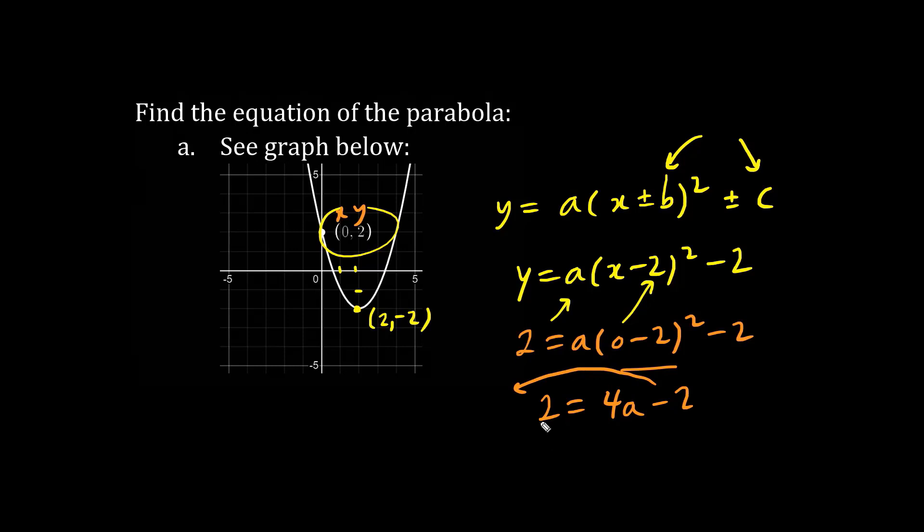We throw the negative over. We have 2 plus 2 is 4. And we realize, dividing both sides by 4, that A equals 1. So the actual equation is y equals 1 times x minus 2 squared minus 2, or just y equals x minus 2 squared minus 2.